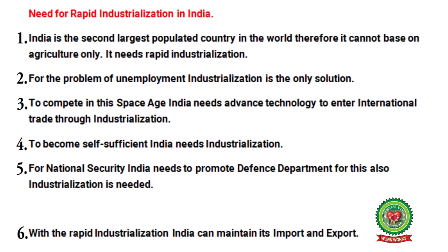Now, the need for rapid industrialization. First, India is the second largest populated country in the world and therefore cannot rely on agriculture alone — it needs rapid industrialization. Second, for the problem of unemployment, industrialization is the only solution. Third, to compete in this space age, India needs advanced technology to enter international trade through industrialization. Fourth, to become self-sufficient, India needs industrialization. Fifth, for national security, India needs to promote the defense sector. And lastly, with rapid industrialization, India can maintain its import and export balance.